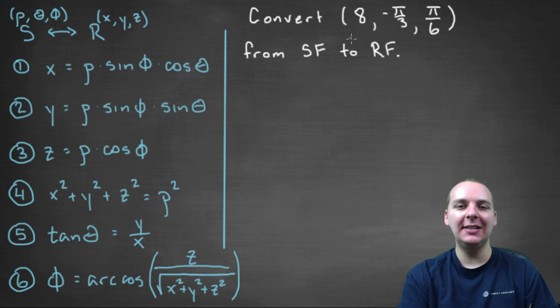So if this is in spherical form currently, that means we know the 8 is going to be the rho, the -π/3 is going to be our theta, and π/6 is going to be our phi.